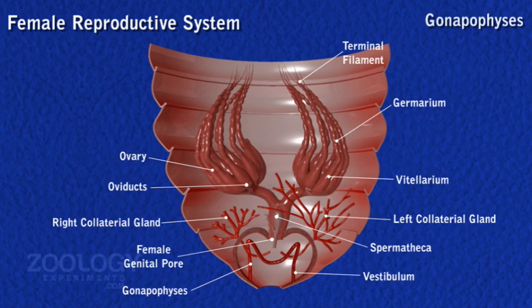Three pairs of plate-like chitinous gonapophyses are present between the female genital pore and the anus. These assist in copulation, in laying eggs, and in the formation of the ootheca.